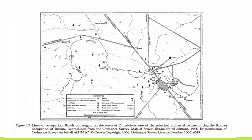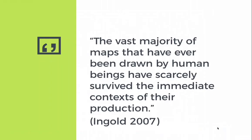So if wayfaring, as Ingold seems to imply, is the most fundamental mode by which living beings inhabit the earth, how do we capture wayfaring within a map? As Ingold says, the vast majority of maps that have ever been drawn by human beings have scarcely survived the immediate context of their production.